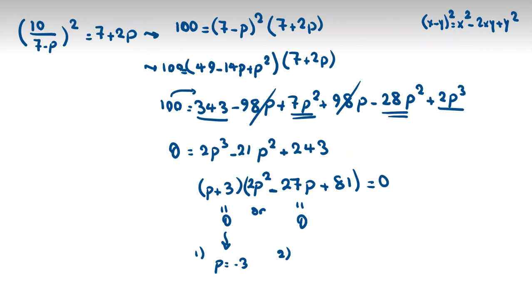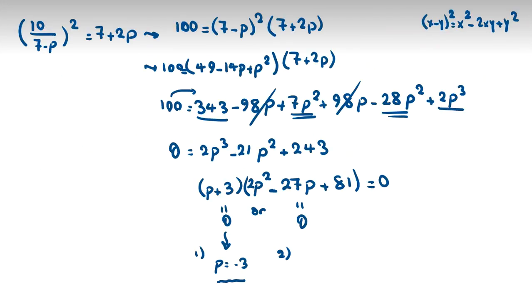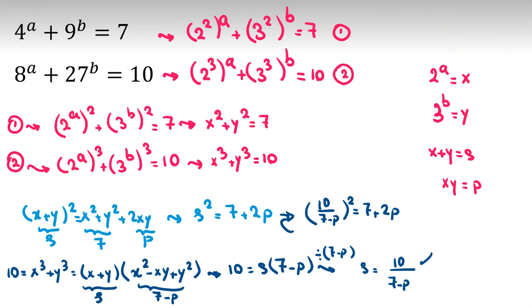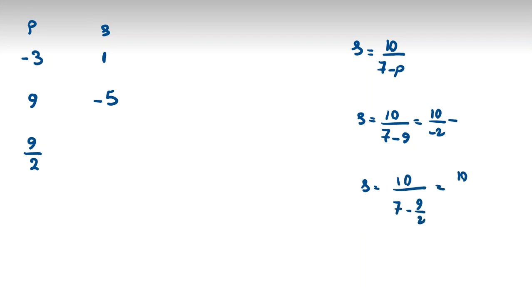So we have three answers: p equals negative 3, p equals 9, and p equals 9 over 2. Now, s equals 10 over 7 minus p. For p equals negative 3: s equals 10 over 10 equals 1. For p equals 9: s equals 10 over negative 2 equals negative 5. For p equals 9 over 2: s equals 10 over 7 minus 9 over 2, which simplifies to 10 over 5 over 2, giving s equals 4.